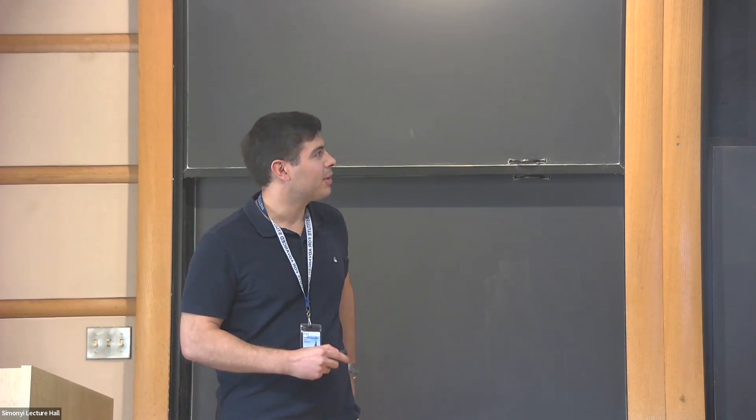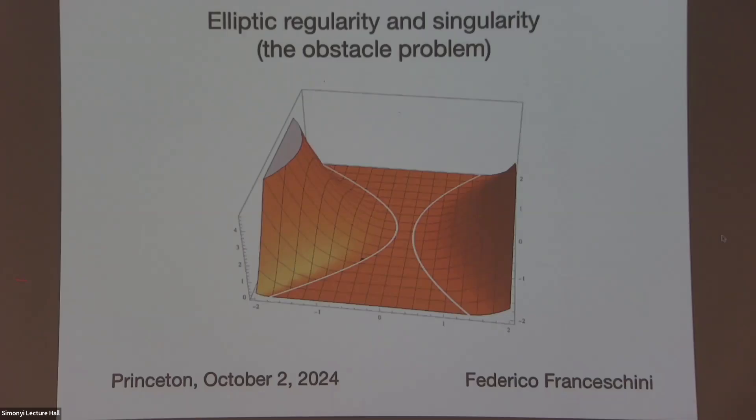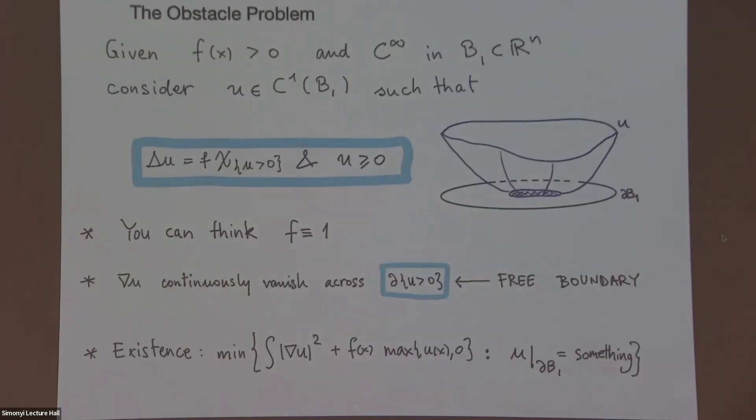I'm excited to speak today. I will talk about elliptic regularity and singularity, but I will stick with a very concrete and rather simple problem to explain the obstacle problem, and I will just present the problem, speak about the result and an awkward conjecture. Okay, so what's the obstacle problem?